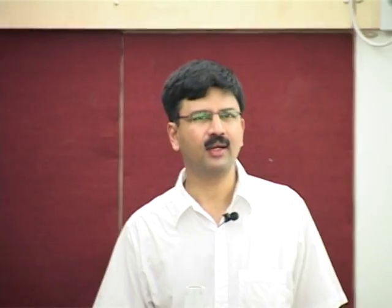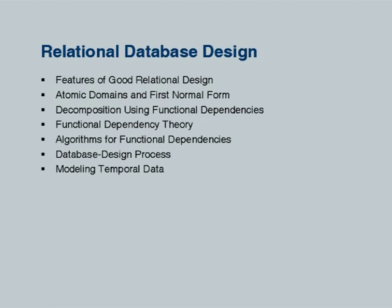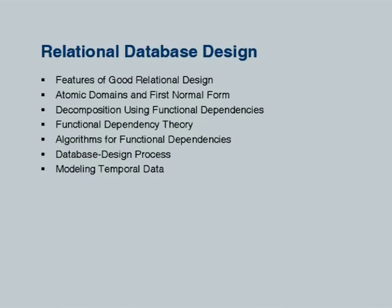The slides are organized in the following manner: we start with intuition of what normalization is, then give a brief definition of normal forms, introducing functional dependencies. After that we get into details including attribute closure, BCNF, canonical cover, third normal form, and then a bit about the database design process and temporal modeling towards the end.